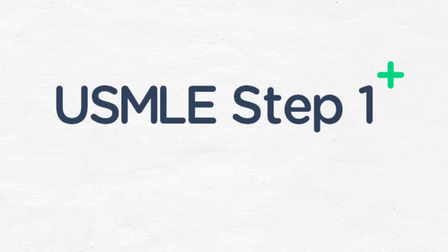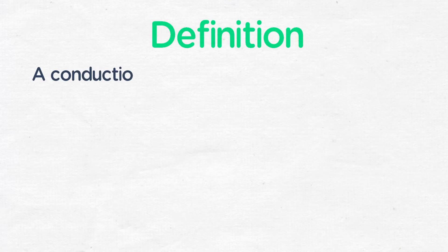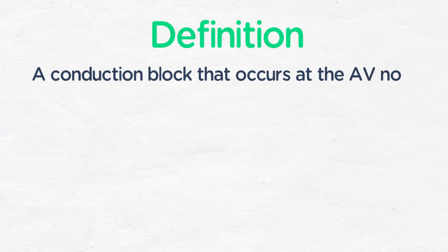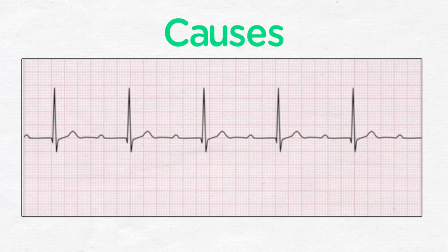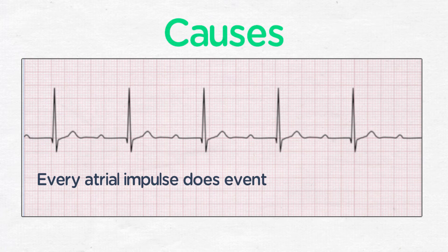I'm Dr. Bernstein, and we're going to be discussing first-degree AV block. As the name implies, this is a conduction block that occurs at the AV node, or the bundle of His, which is immediately distal to the AV node. The wave of depolarization gets delayed, but then continues on its way in a normal fashion. Every atrial impulse does eventually get conducted and trigger a QRS complex. This is seen on EKG as a long PR interval.